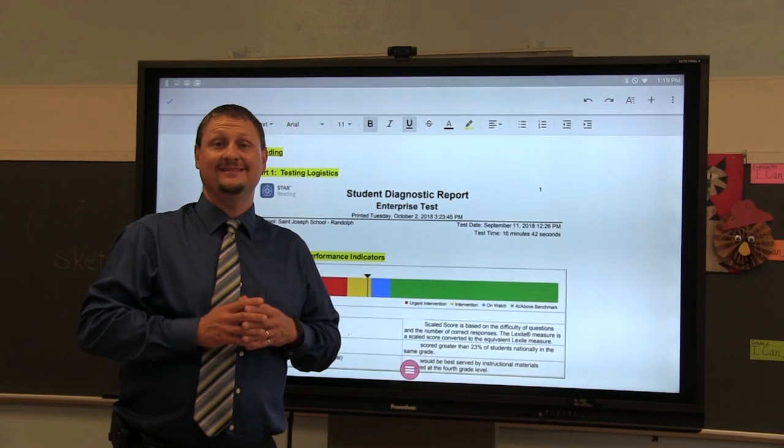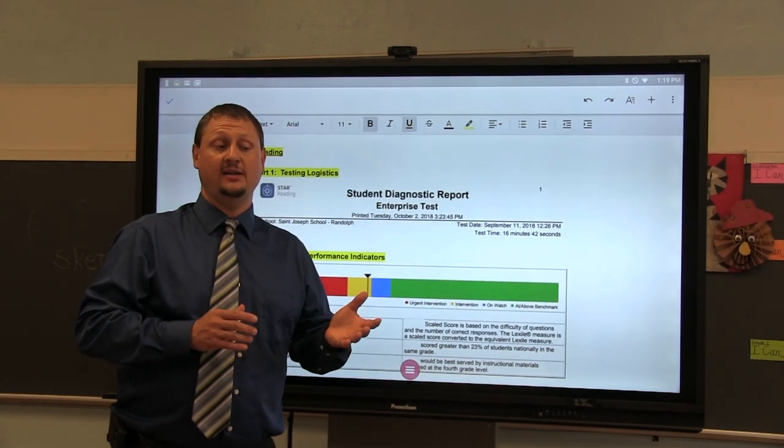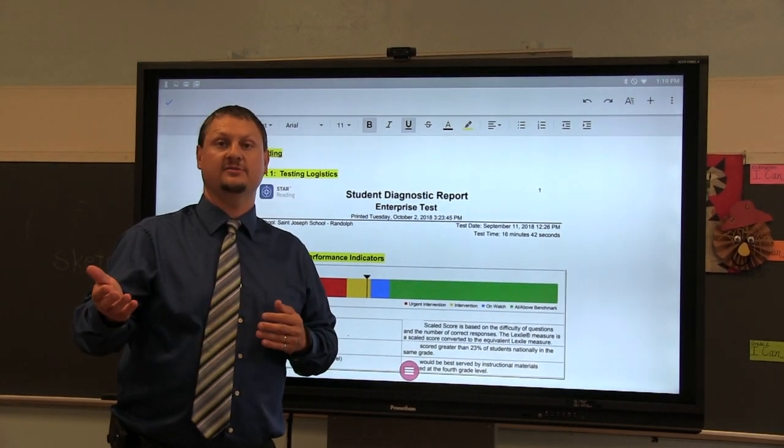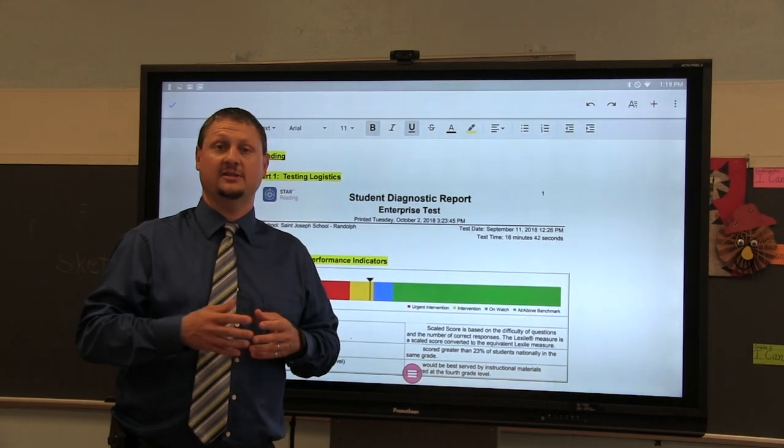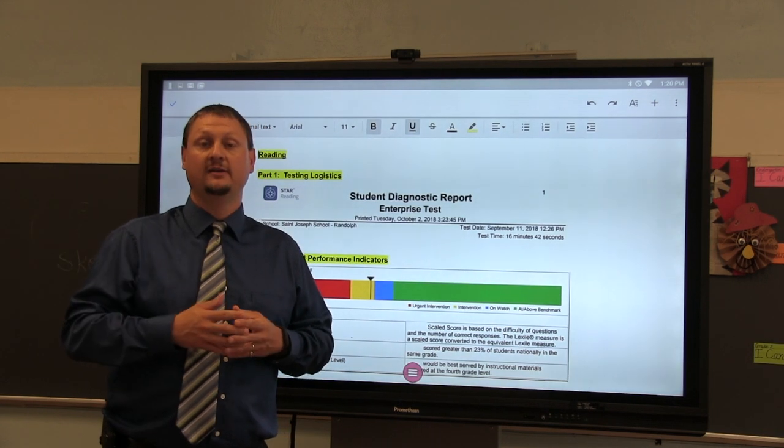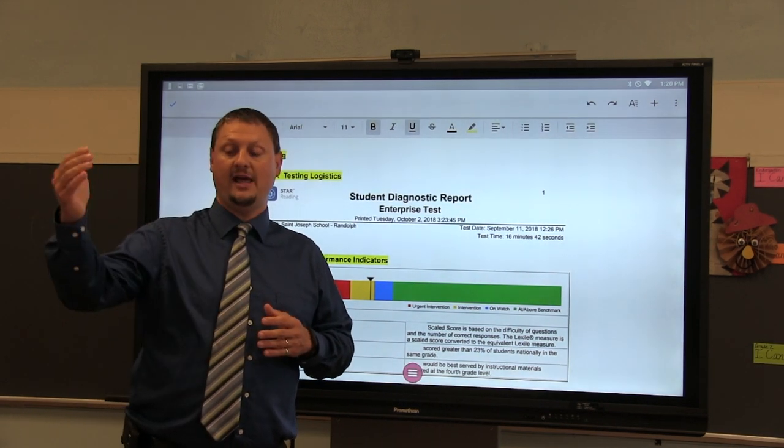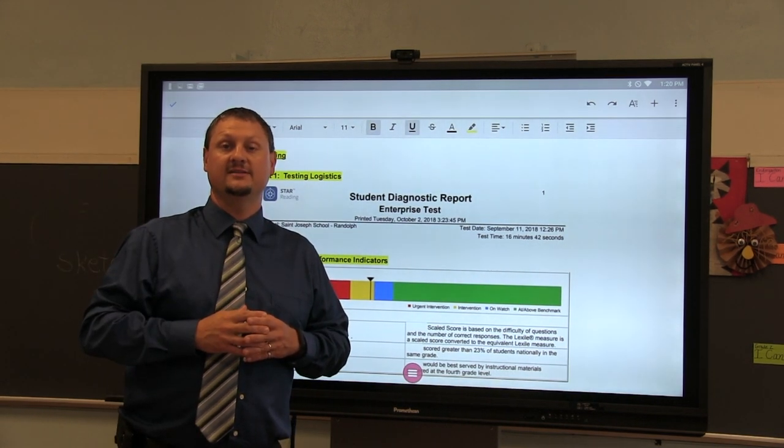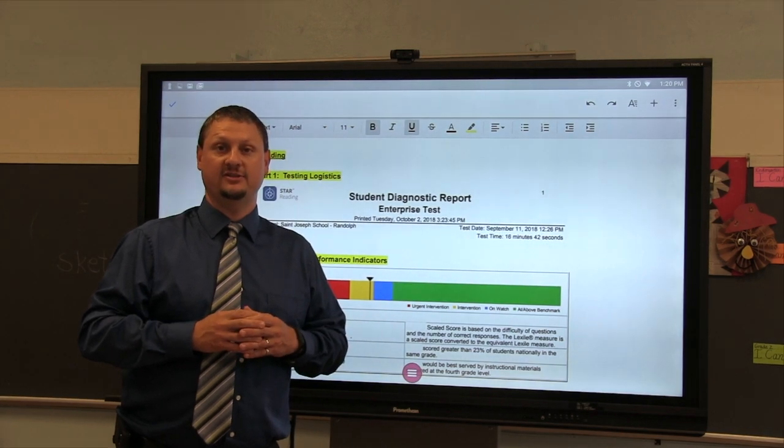The STAR assessment is adaptive which means that it will change based on the student. If a student answers a question correctly it'll give them a question that's a little bit higher level. If they answer another question correctly it'll give them a question that's higher level yet. If they happen to miss the next question that level will actually drop and what it does is zero in on that student's level of achievement.